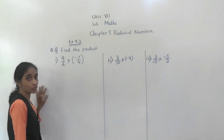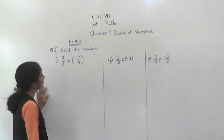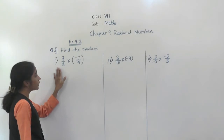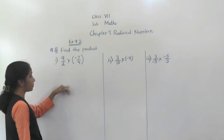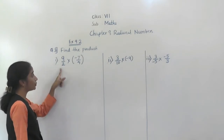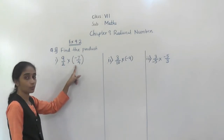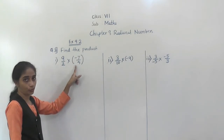Let's solve question number 3: Find the product. In the first example, we have 9 upon 2 multiplied by minus 7 upon 4.